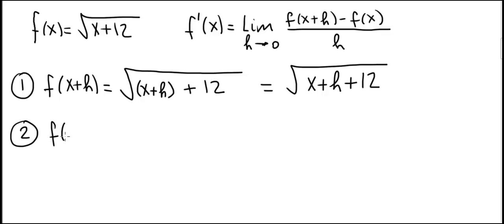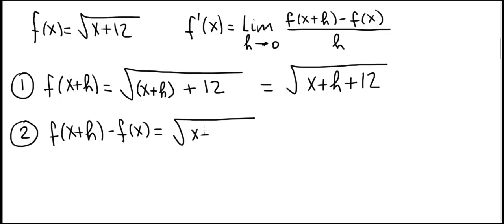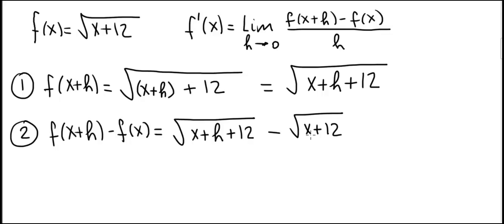Step two is to take f of x plus h and subtract f of x. We just computed f of x plus h — that's the square root of x plus h plus 12. We subtract f of x, which is square root of x plus 12. The idea of step two is to factor out an h if at all possible.